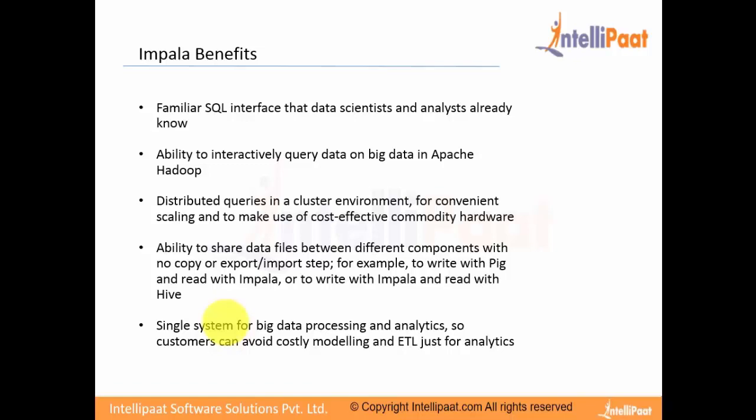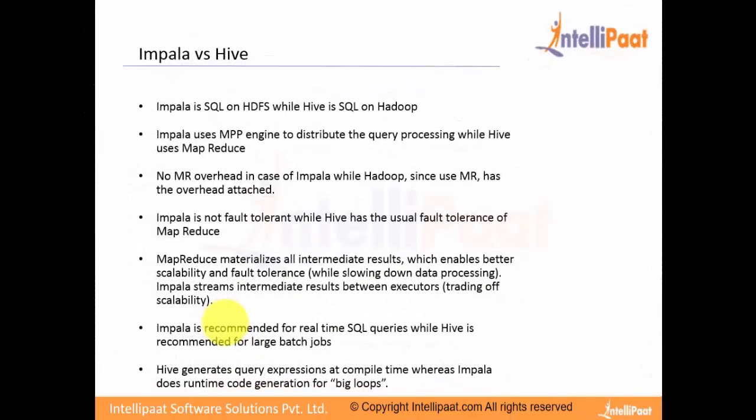After discussing these benefits, let's see how Impala is different from Hive. First of all, Impala is SQL on HDFS while Hive is SQL on Hadoop. Hadoop consists of two core components: a way to store data — commonly HDFS or Amazon S3 — and a way to process data — commonly MapReduce. When we say Hive is SQL on Hadoop, Hive leverages the MapReduce processing paradigm to process data stored on HDFS. Whenever we fire any SQL query using Hive, it will first be converted to MapReduce and then be executed on the cluster to process the data on HDFS.